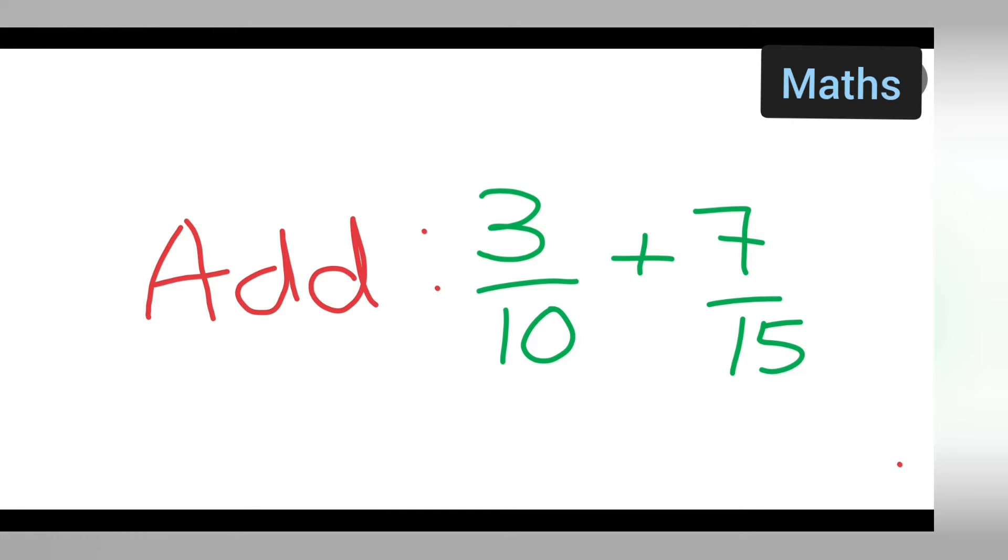So in today's class of mathematics, let us see how to add when you have two different denominators, that is 3 upon 10 plus 7 upon 15. Here we have two different denominators, so we cannot add directly.